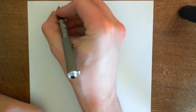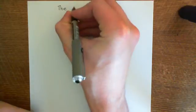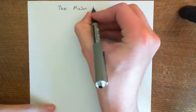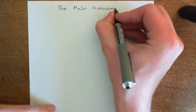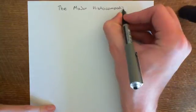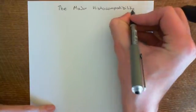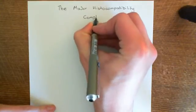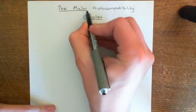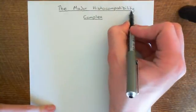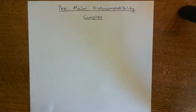Welcome to this next video in the playlist on Rheumatoid Arthritis. In this video we're going to talk about the Major Histocompatibility Complex. We're going to talk about the structures of the MHC Class 1 and the MHC Class 2, and we're going to talk about the genetics, because there is a specific MHC Class 2 that gives you increased susceptibility to developing rheumatoid arthritis. So to understand what this means, we need to study the Major Histocompatibility Complex.